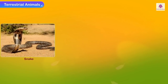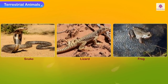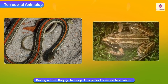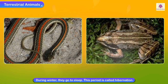Snakes, lizards and frogs are very active in summer. During winter they go to sleep — this period is called hibernation. Their bodies cannot adjust to the low temperature.